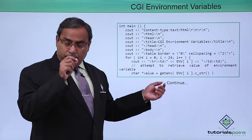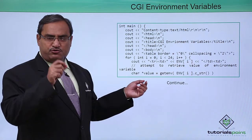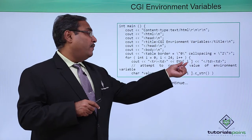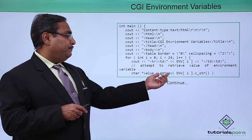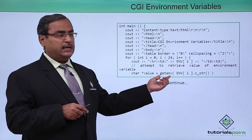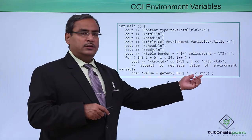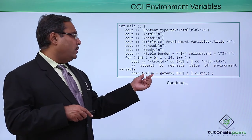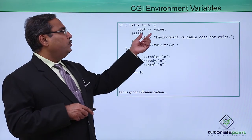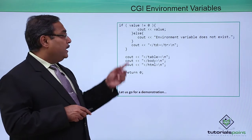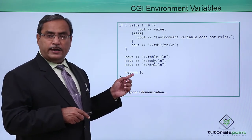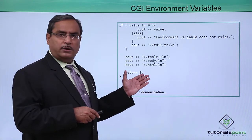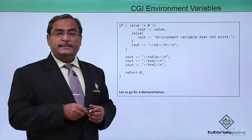env[i] means we are taking out the respective string from this env constant string array from the ith location. Then getenv function has been called and env[i].c_str function has been called, and the value thus obtained will be printed accordingly. This is the code we have written. For better understanding, let me go for the execution of the code.